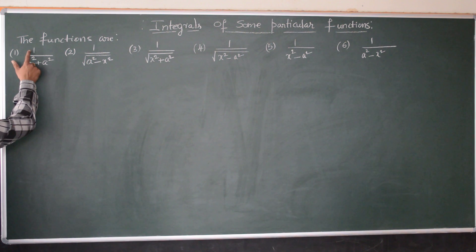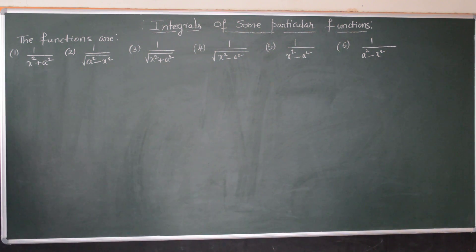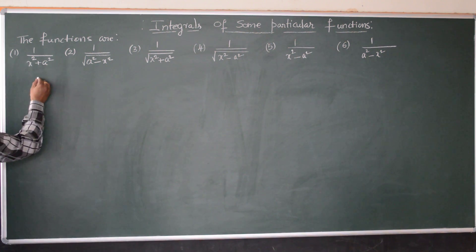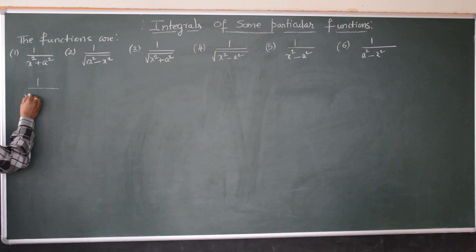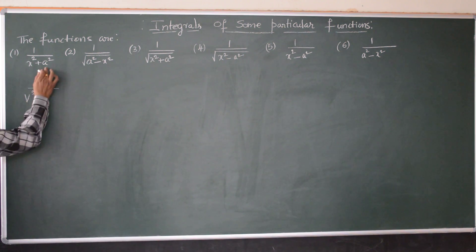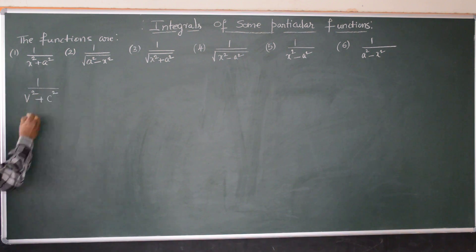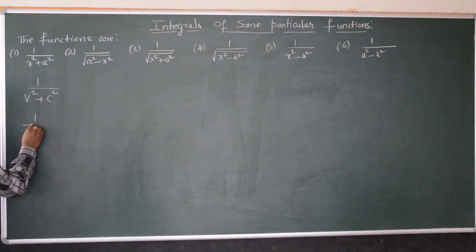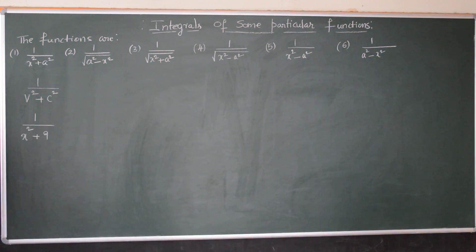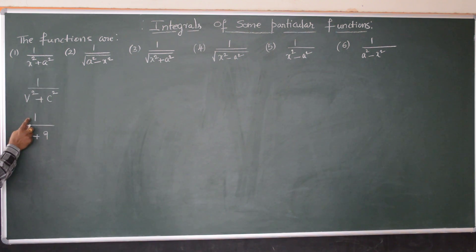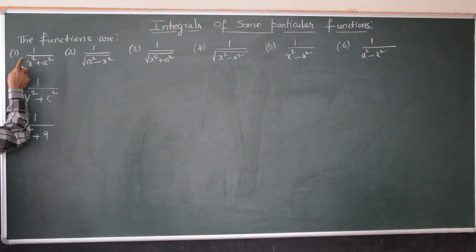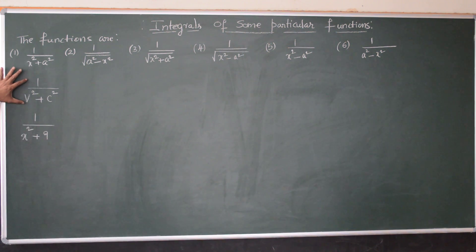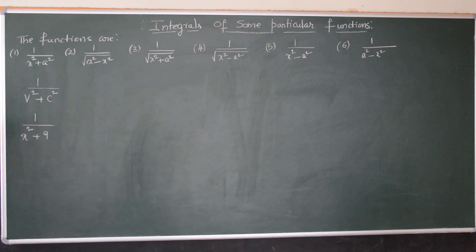The first function is 1 over x² plus a². You can remember it like this: x is the variable and a is the constant, so it is variable square plus constant square in the denominator. Whenever we have to integrate a function like 1 over x² plus 9, it matches this standard form — 1 over variable square plus constant square.